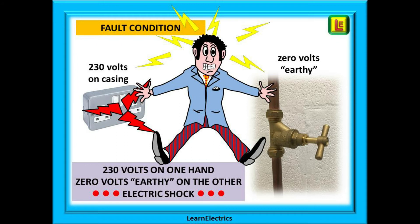Let us now introduce a fault. As Eric leans across to the electrical socket, it suddenly develops a fault — the socket casing becomes live and his hand is in contact with 230 volts. His other hand is on the earthy water pipe at zero volts. There is now a path for electrical current to flow right through Eric's chest. There is 230 volts difference between his two hands, and Ohm's law tells us that a current will flow. Poor Eric — he gets a whopper of an electric shock.